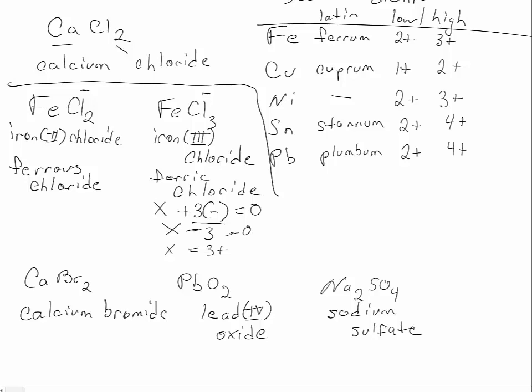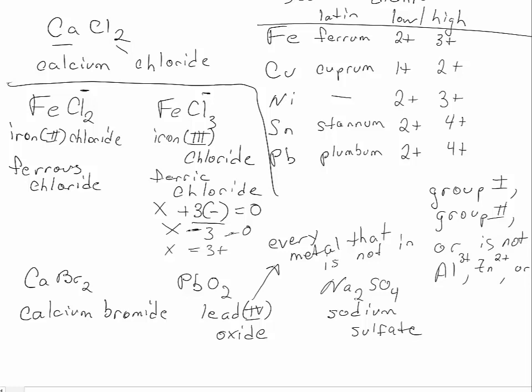So you may be saying, well, when do you need to use the Roman numerals? And the short story is that you need to use the Roman numerals for every metal that is not in group 1, group 2, or is not aluminum, zinc, or silver. So all group 1 metals will always have charges of 1+. All group 2 metals will always have charges of 2+. Aluminum will always have a charge of 3+. Zinc will always have a charge of 2+, and silver nearly always will have a charge of 1+. So at least for 1211, we're not going to worry about other charges.